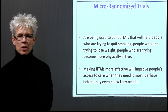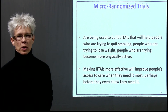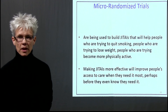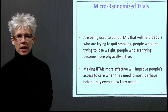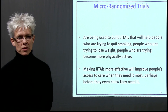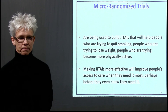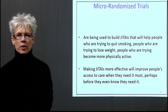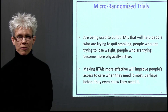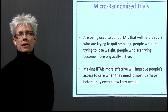Micro-randomized trials are being used to build just-in-time adaptive interventions that help people trying to quit smoking, stay in recovery after substance use or abuse, lose weight, eat more healthily, and so on. If we can make just-in-time adaptive interventions more effective, this will improve people's access to care — providing care when they need it most, wherever they need it most, and sometimes even before they themselves know they need the care.